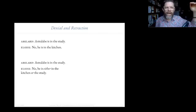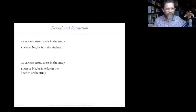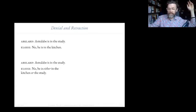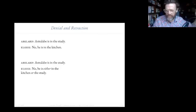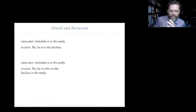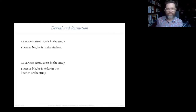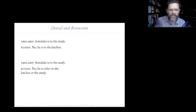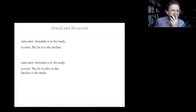Contrast this with: Abelard says 'Astrolabe's in the study' and Eloise says 'no, he's either in the kitchen or in the study.' They've looked at all the places or so Abelard thinks, so he says 'Astrolabe's in the study.' Eloise recognizes they haven't checked the kitchen. If you think that 'no' is expressing a denial in the sense of something like the assertion of the negation, then that's crazy — she is not asserting the negation of 'Astrolabe is in the study.' It would have been more informative if she'd said 'he's in the kitchen.'